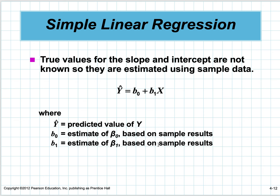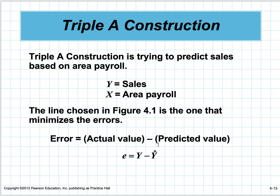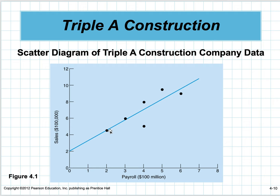We're trying to predict sales. y equals sales, x equals payroll. The error is the actual value minus the predicted value. We'll have a line, and we measure it in terms of y. A point right on the line is going to have zero error.